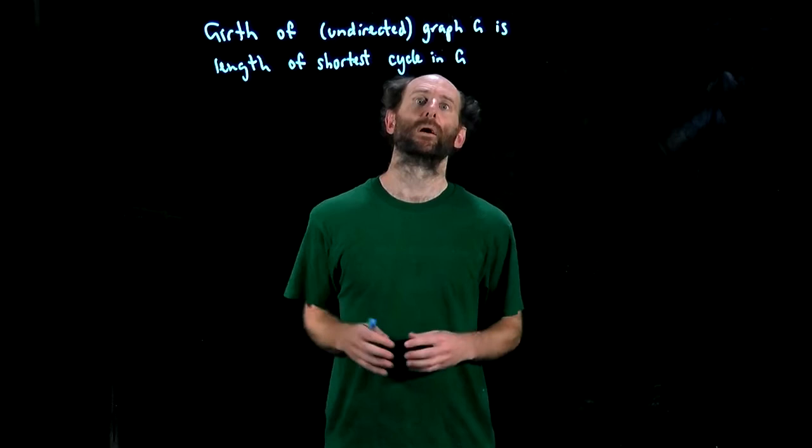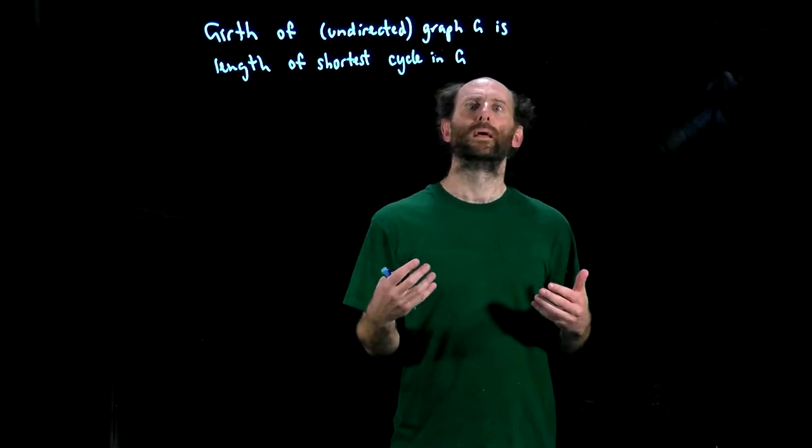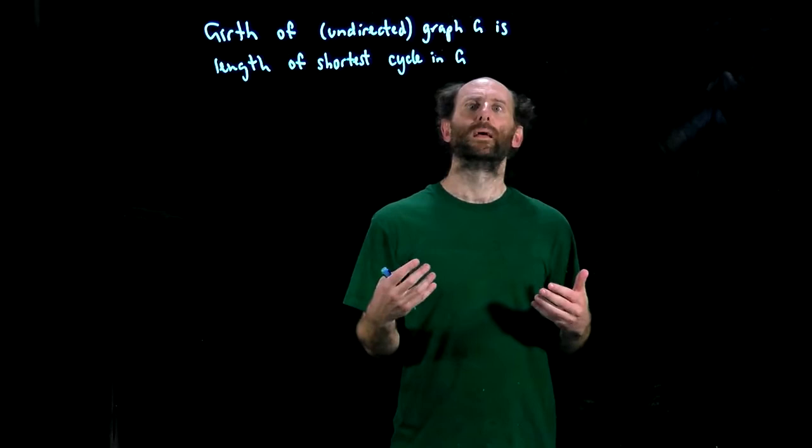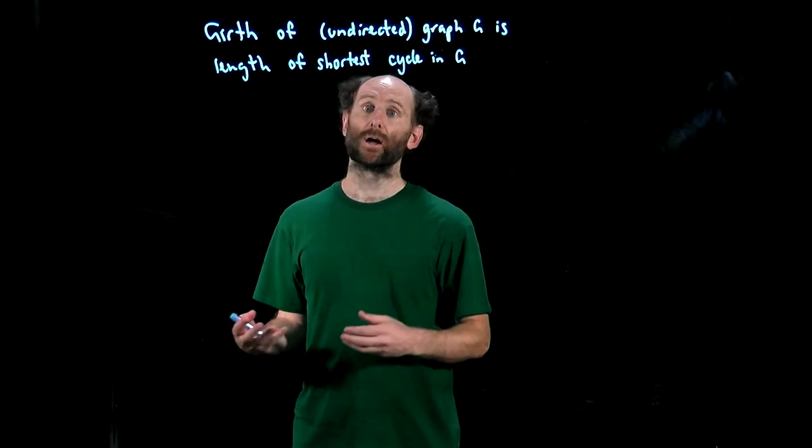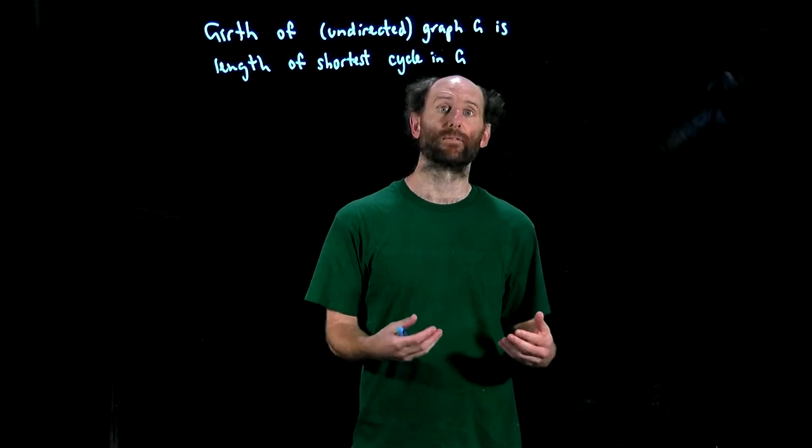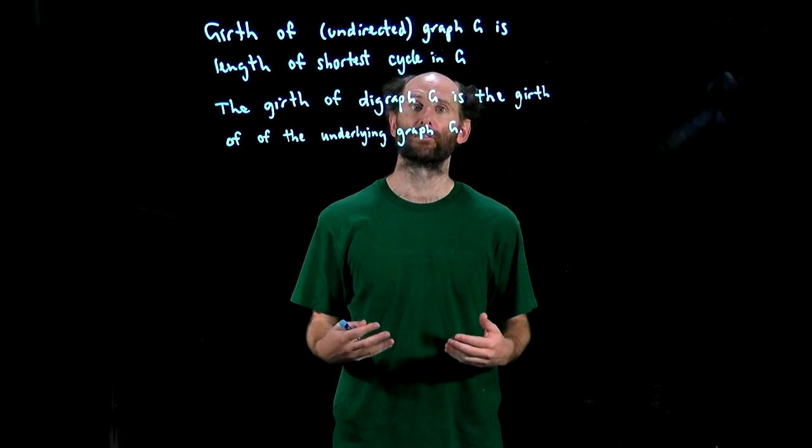Finally, I'd like to finish with this definition of the girth of a graph. The girth of an undirected graph is the length of the smallest cycle in that graph. If G is a digraph, then the girth of G is simply the girth of the underlying graph of G. Sometimes we'll talk about another concept called the directed girth of a digraph, which is simply the length of the shortest directed cycle in the digraph.